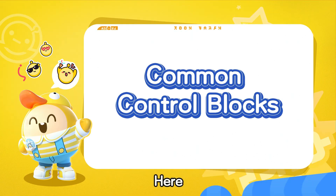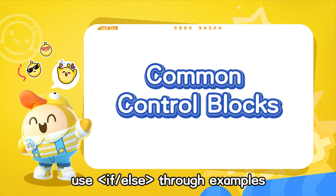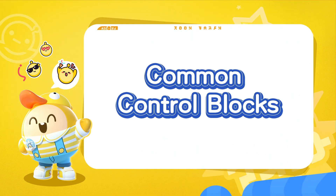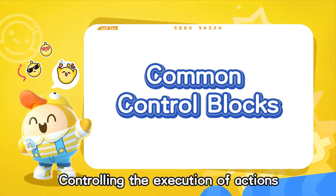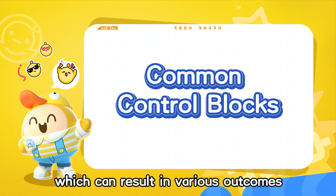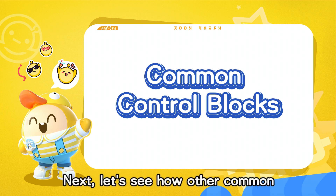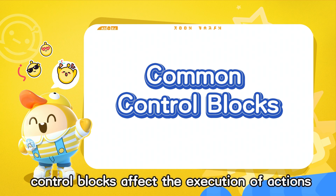Here we have learned how to use if-else through examples. Controlling the execution of actions is based on judging if conditions are met, which can result in various outcomes. Next, let's see how other common control blocks affect the execution of actions.